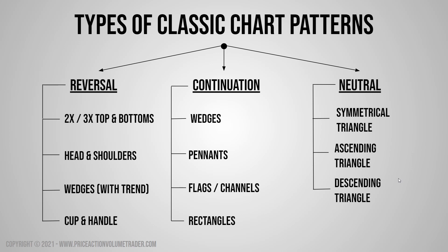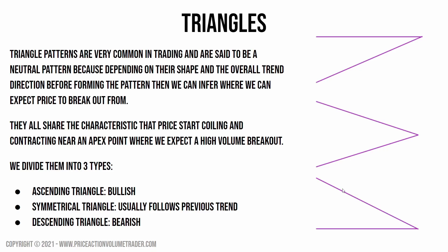Triangle patterns are very common in trading and are considered a neutral pattern because depending on the shape and overall trend direction before the formation, we can infer where to expect a breakout. They all share characteristics where price is coiling and contracting near an apex point — around the tip where the trend lines or support and resistance meet — and we can expect a high-volume breakout to confirm the pattern. We divide them into three types: ascending, descending, and symmetrical.